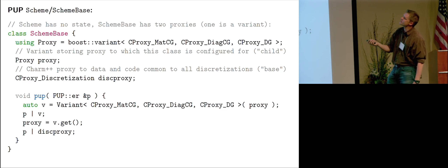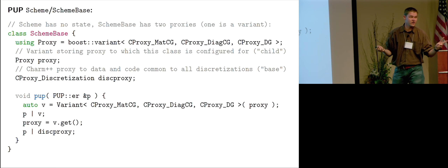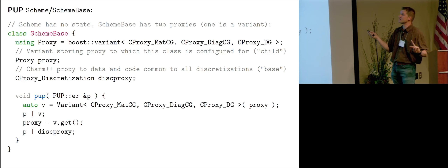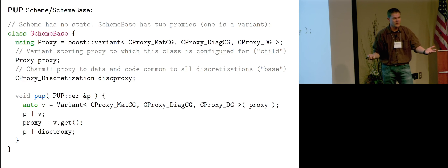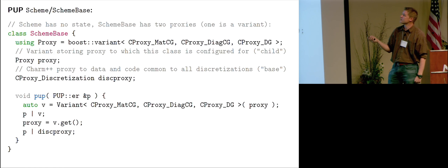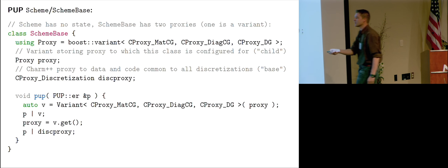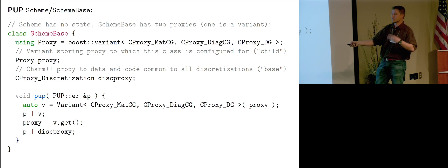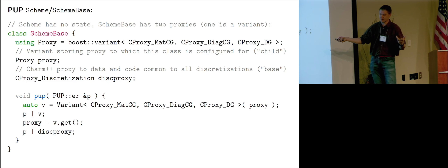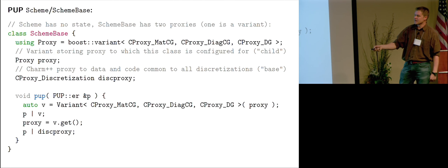Here is scheme and scheme_base. Scheme has no state at all — everything is in scheme_base. It has two proxies, one is a variant. The normal proxy is straightforward — Charm++ handles that. The variant is the tricky part because it can have different types, and I want to make sure the right type comes out on the other end. Here is how the pup (pack/unpack) routine looks — three lines. The base is trivial. The polymorphic child looks like this: capital Variant — I'll show you next how that's implemented — that's the client code for sending the type across the network. The type can be one of these three types, whichever the variant is configured for. I create this intermediate V, pop it, and use V.get() to get the right type out.